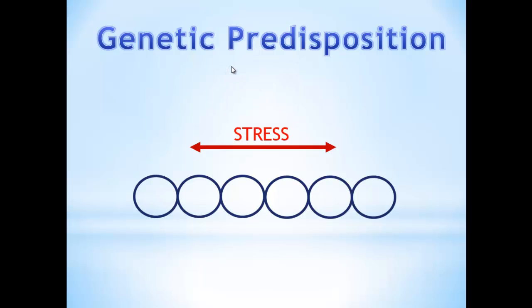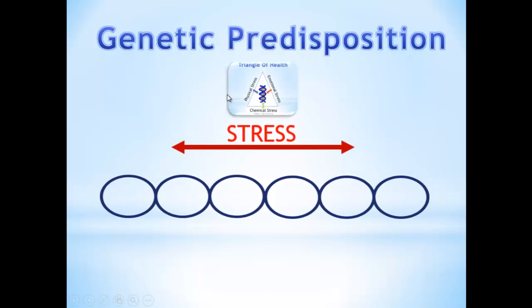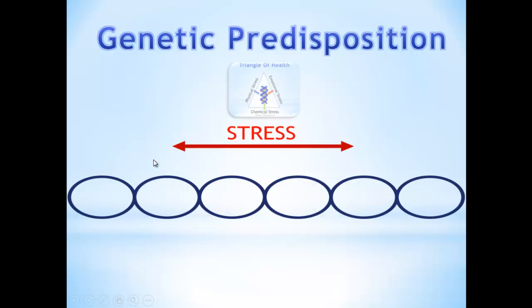When that stress is pulled tight, one more time here, you can see that chain is pulled tight and if we manage our stress the chain adapts and goes back to normal. But if we're not managing our triangle of health or our underlying stress, that chain is going to be pulled tight and that stress will stay active.